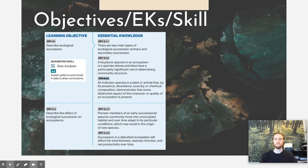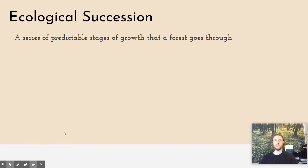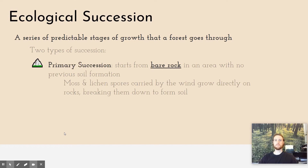Ecological succession refers to a series of predictable changes that occurs in a forest ecosystem. There are two different types, and the first type is referred to as primary succession. In primary succession, the area has only bare exposed rock, so there's no previously formed soil.